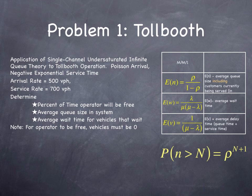The arrival rate is 500 vehicles per hour. The service rate is 700 vehicles per hour. Determine the percentage of time that the operator will be free, the average queue size in the system, and the average wait time for vehicles that wait. Pause the video and solve the problem.